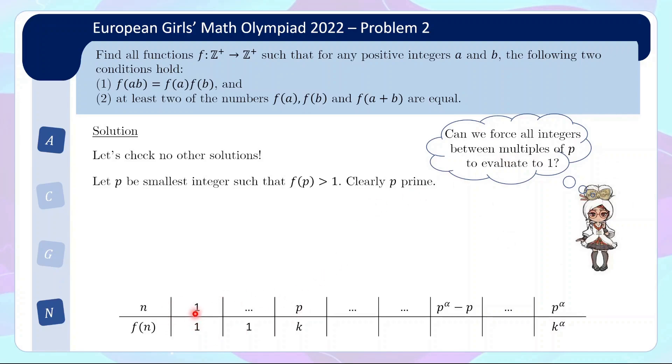So here's our table. We have all the f equals to 1. p is the first instance where we have bigger than 1, let's call it k. And instead, I'm going to just show that for powers of p, if we look at the entry just before that, so p to the alpha minus 1, I'm going to show that it evaluates to 1 for all such cases. So every time you have a power of p, you know this is k to the alpha, the entry before that I claim will be evaluated to 1.